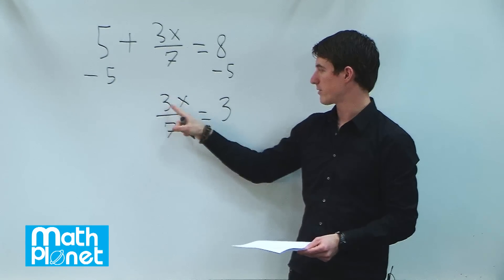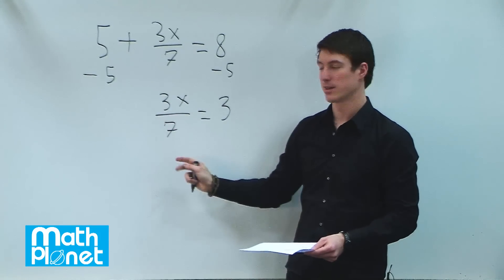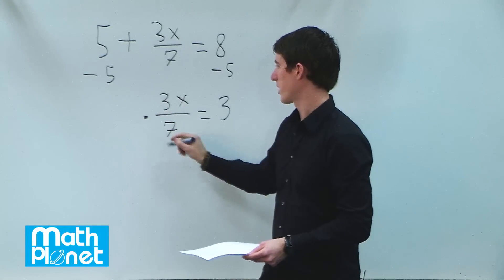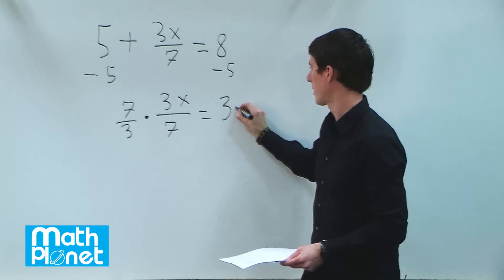The number in front of the x is 3 over 7. So we can multiply by the inverse of that to get x by itself. The inverse of 3 over 7 is 7 thirds, and so we can multiply that by both sides.